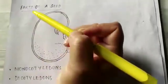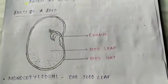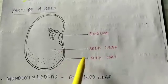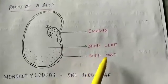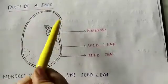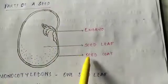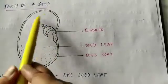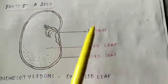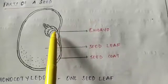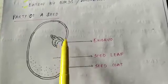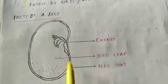Next topic is parts of a seed. The main parts of seeds are embryo, seed leaf and seed coat. The seed coat is the outer covering of a seed and it protects the seed inside it from different conditions — this is the outer part of a seed. Next, you have the seed leaf, also known as cotyledon — it stores food for the embryo. The embryo is the innermost part of a seed and this part grows into a baby plant. So these are the different parts of a seed.